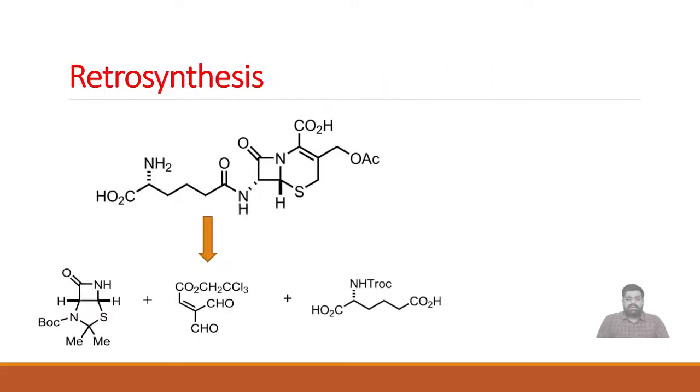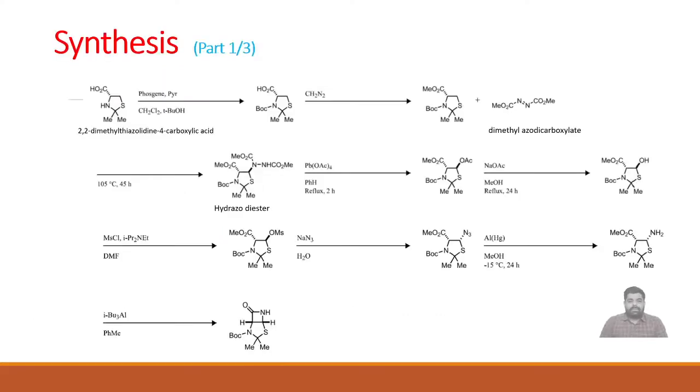Retrosynthesis suggests that R.B. Woodward and co-workers divided this molecule into three different kinds of intermediates. First, they prepared this beta-lactam containing compound, then secondly this ester, and then condensation gives a molecule which was then attached by this side chain. This is how cephalosporin is synthesized in 19 different steps. Let's see the first step.